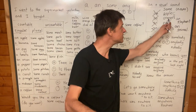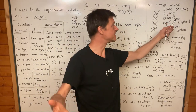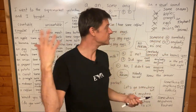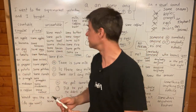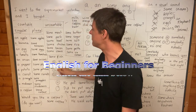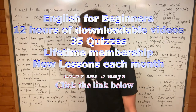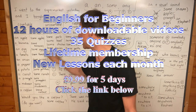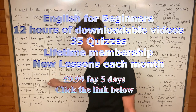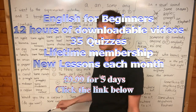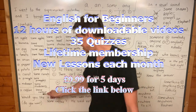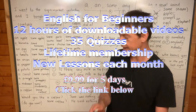Many oranges / some oranges; many eggs / some eggs; many onions / some onions. So: I went to the supermarket yesterday and I bought some apples, some bananas, some eggs, some tomatoes, some onions, some peppers, some potatoes, some carrots, some pineapples, some mushrooms, and some coffee.